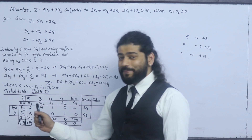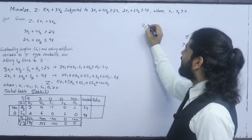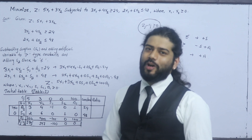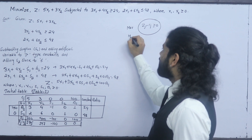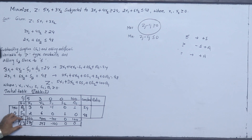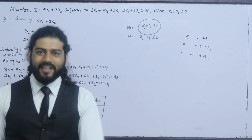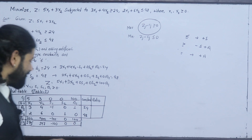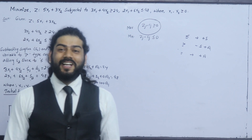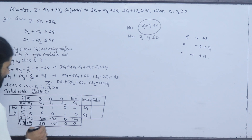Now, what is the value of zj minus cj? For maximization, the solution is optimal when all zj minus cj values are greater than or equal to 0. For minimization, it is just the opposite: the solution is optimal when all zj minus cj values are negative or equal to 0.